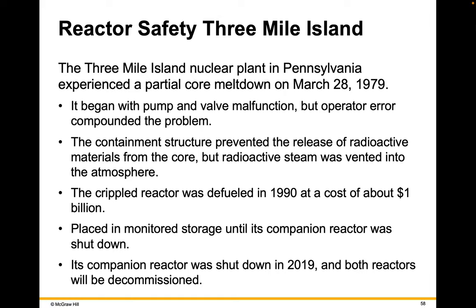Three Mile Island is a nuclear plant in Pennsylvania that experienced a partial core meltdown in 1979. It began with pump and valve malfunction, but operator error compounded the problem. The containment structure prevented the release of radioactive materials from the core, but radioactive steam was vented into the atmosphere. The crippled reactor was defueled in 1990 at a cost of about $1 billion and placed in monitored storage until its companion reactor was shut down in 2019; both reactors will be decommissioned.